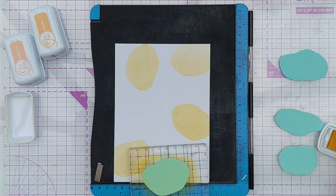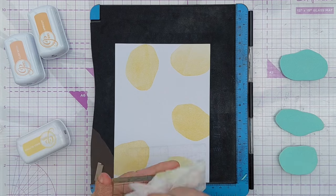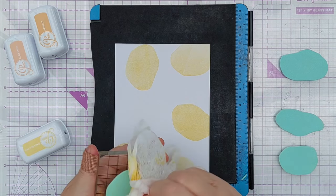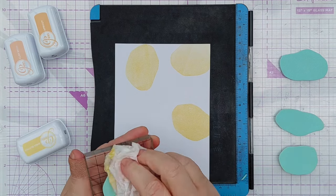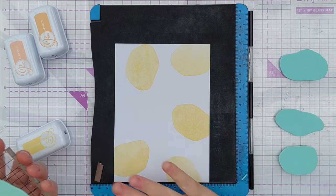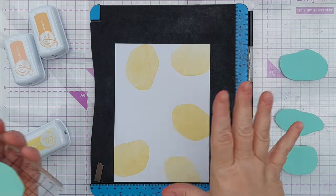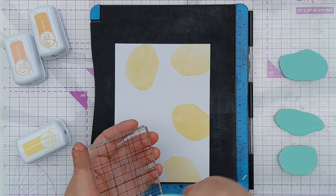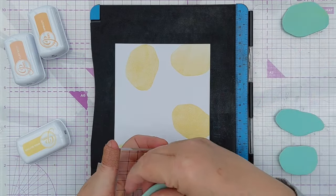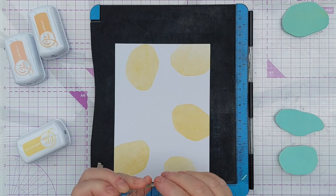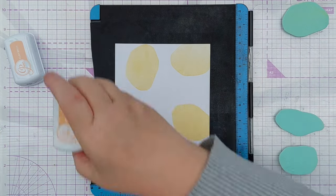I've chosen to use Catherine Pooler inks because they're dye inks and they're translucent so when the shapes overlap you should get some layering of the colour. Okay so that's that one, there's still plenty of glue on there, we'll do this one and I think we'll do apricot.